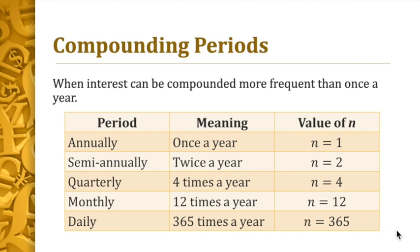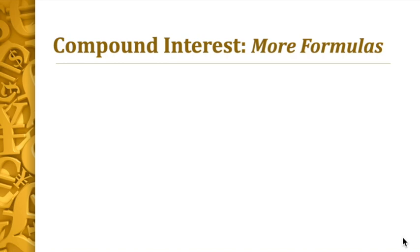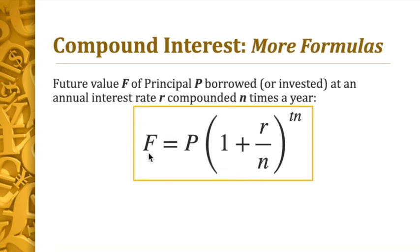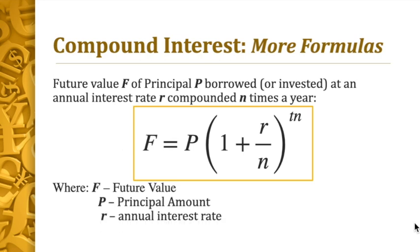Now what is the formula when n is considered? The future value F of a principal amount P borrowed or invested at an annual interest rate r compounded n times a year is: F equals P times the quantity of one plus r over n, raised to n times t. The r is divided by n because r is an annual interest rate, so you divide it by the number of times you apply it per year. Where F is the future value, P is the principal amount, r is the annual interest rate, n is the compounding period, and t is the time in years.